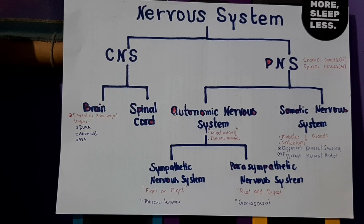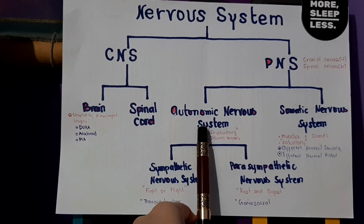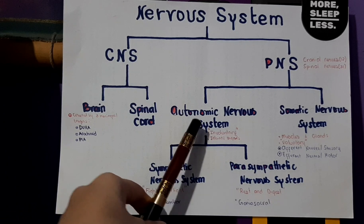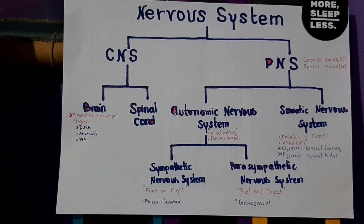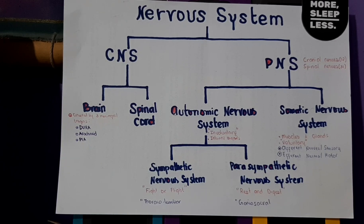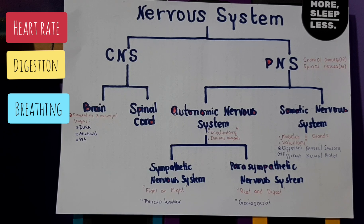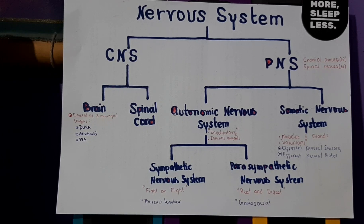In terms of major function, the peripheral nervous system is divided into the autonomic nervous system and the somatic nervous system. The autonomic nervous system is responsible for involuntary movements — it operates even without our consciousness. Examples include the heartbeat, which continues even while we sleep.